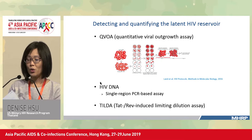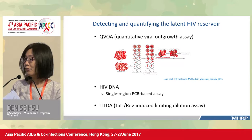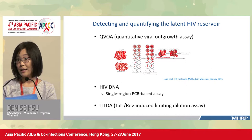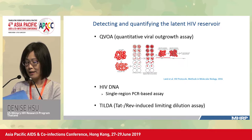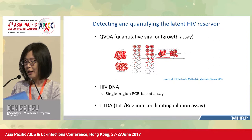The other method to quantify the latent reservoir is the HIV DNA assay, where a single conserved region — usually gag or pol — is amplified by PCR and detected. Finally, something in the middle of the two is the TILDA assay, or TAT-REV-induced limiting dilution assay. In this assay, cells are also activated to induce HIV expression, and evidence of replication-competent virus is indicated by the presence of TAT and REV RNA, which are measured by PCR, doing away with the need for virus propagation.